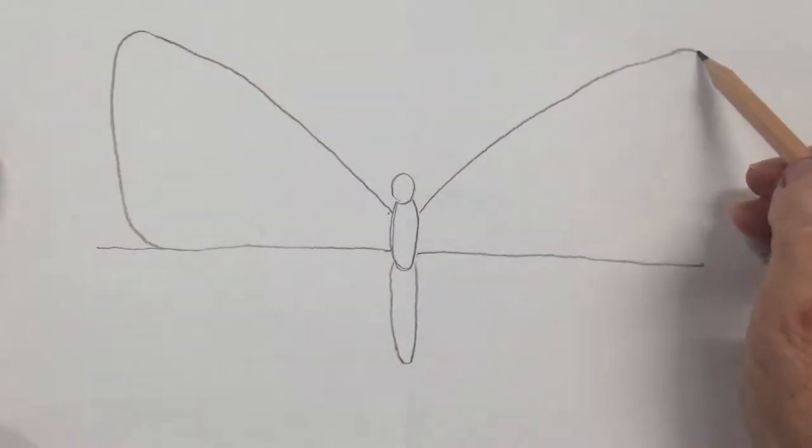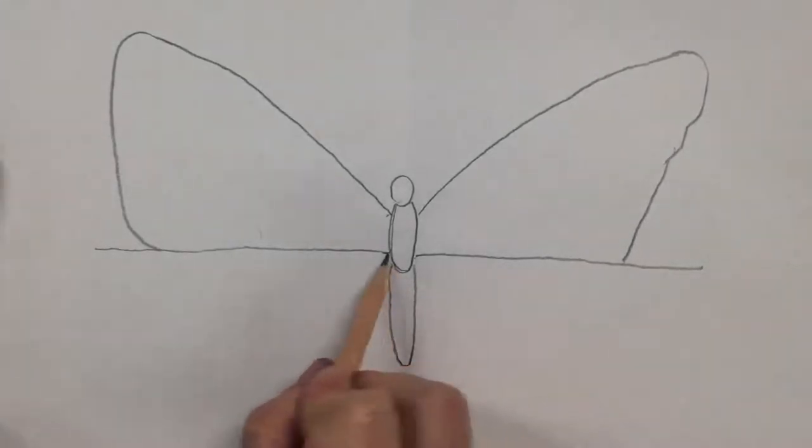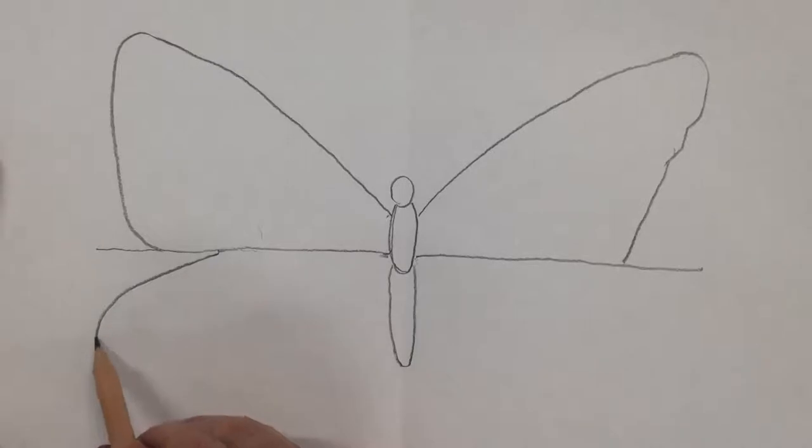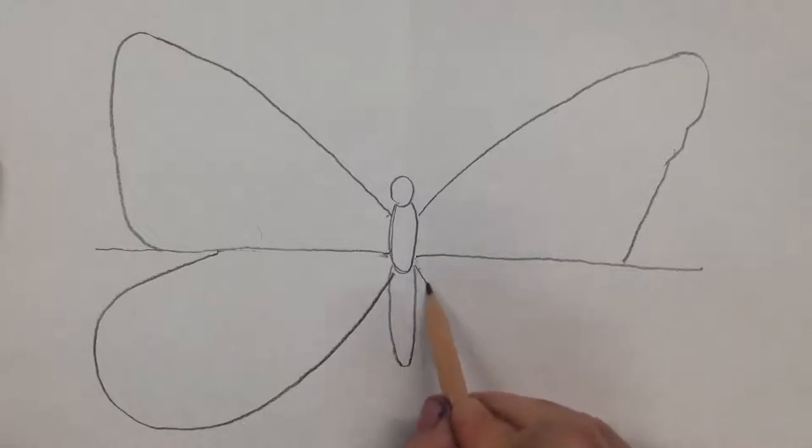Do the same to the other side, curve it around, start turning it in a bit. Go back to the body, go along this line, go out, go up to the top, do the same on the other side.